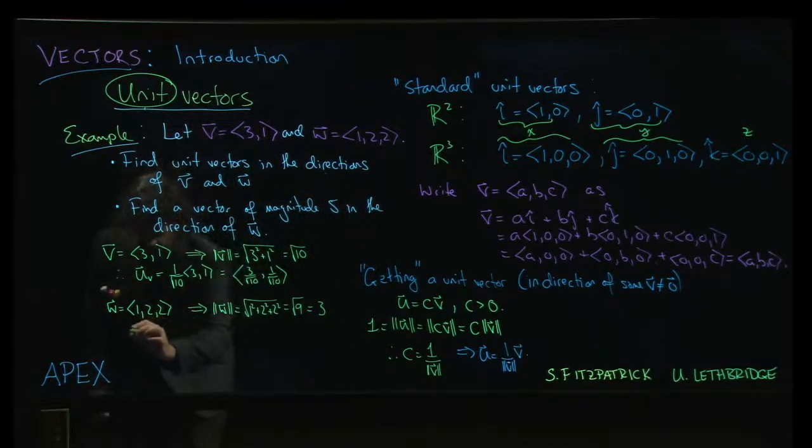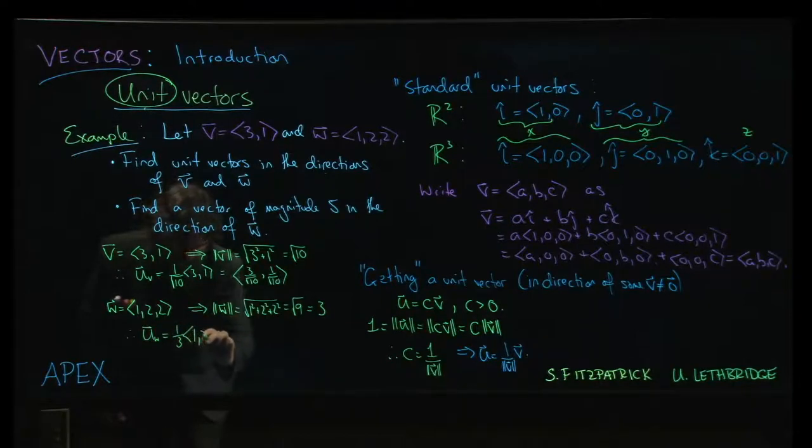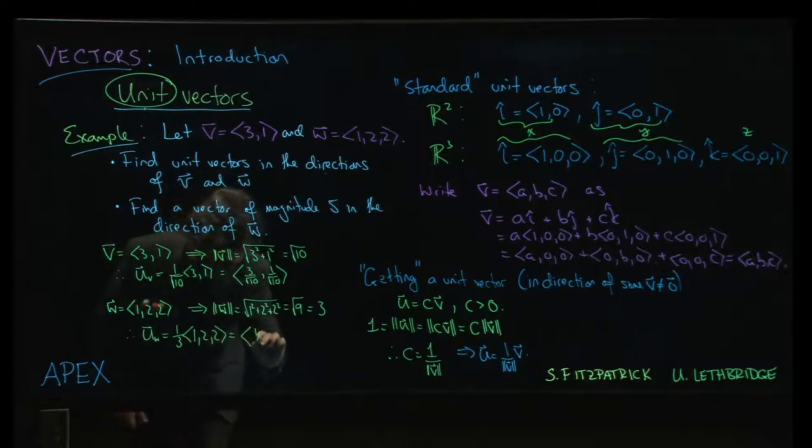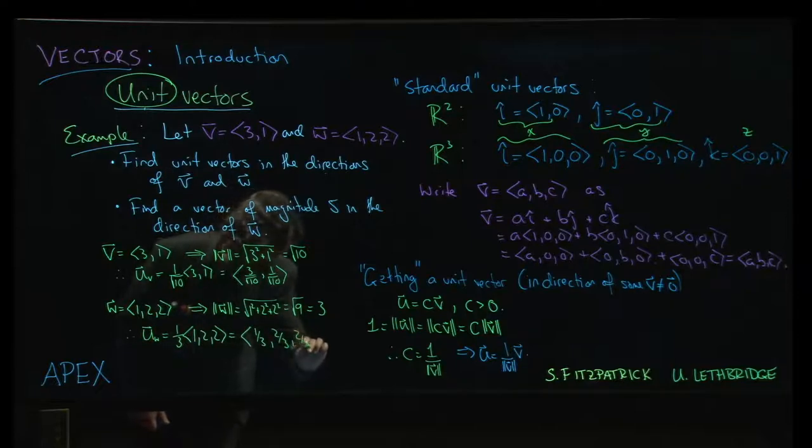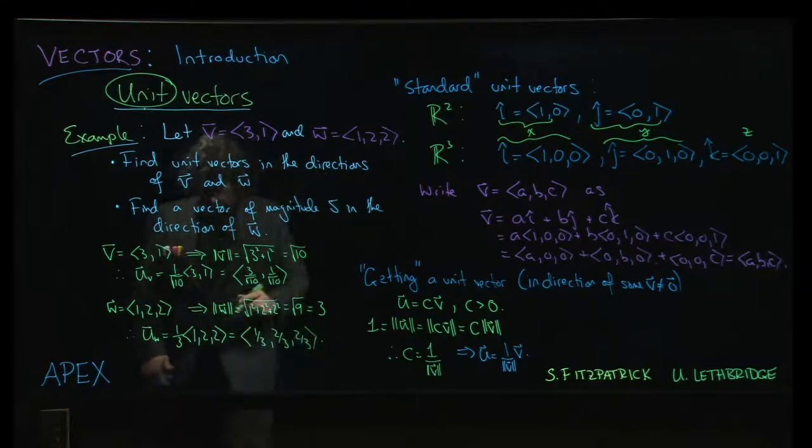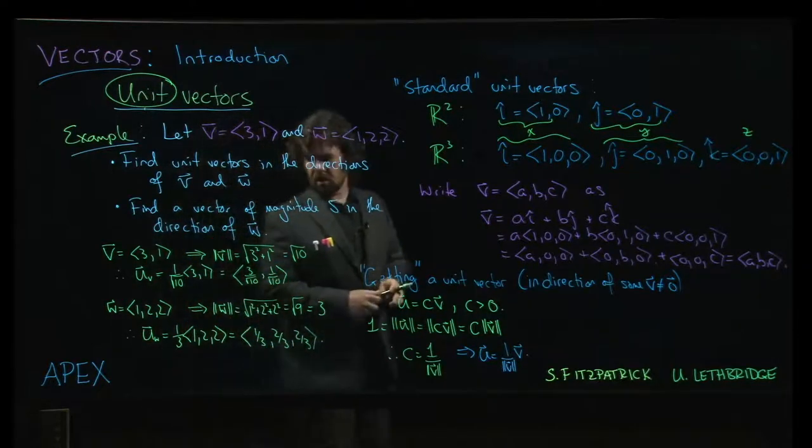Alright, so that means that a unit vector in the direction of w will be 1 over the magnitude, so 1 over 3 times the original vector (1, 2, 2). So that is (1/3, 2/3, 2/3). Okay, we've got our unit vectors.